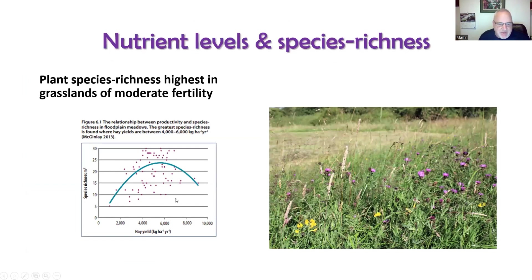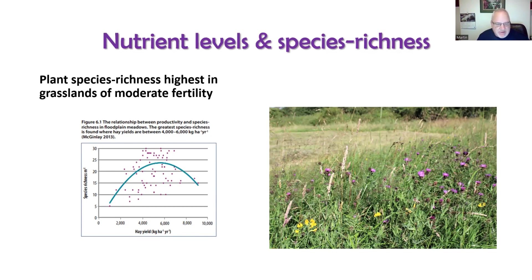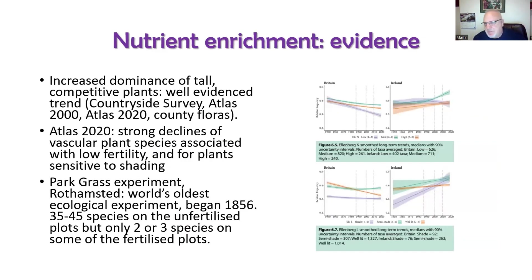Here's another graph, this time to do with floodplain meadows — a type of grassland that's been very well researched thanks to the Floodplain Meadows Partnership based at the Open University. This type of meadowland develops in actually quite fertile conditions, but again you can see this curve, with species richness peaking at intermediate soil fertility levels and dropping off when levels are very low or very high.